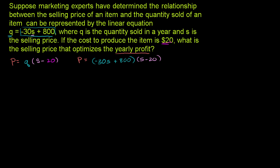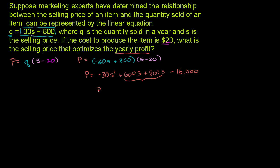Let's multiply this out so we have a nice clean trinomial. Profit equals negative 30s times s = -30s². Negative 30s times -20 = +600s. 800 times s = 800s. And 800 times -20 = -16,000. So merging the middle two terms, profit equals -30s² + 1400s - 16,000.